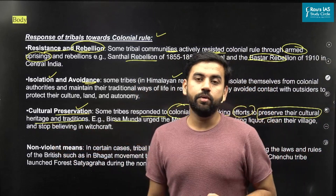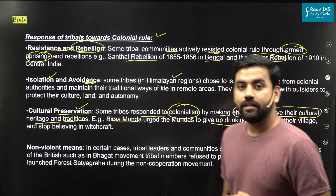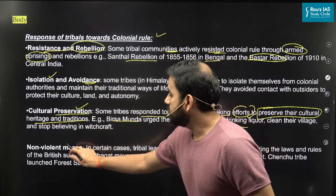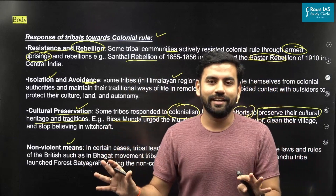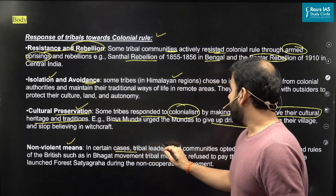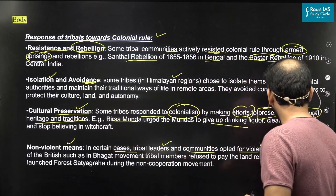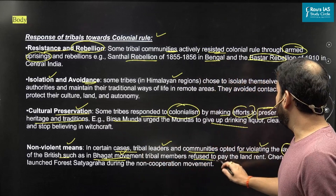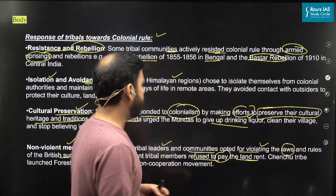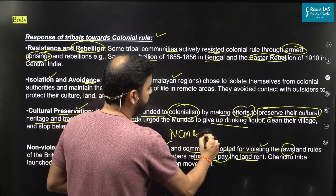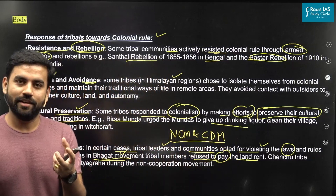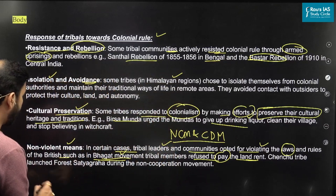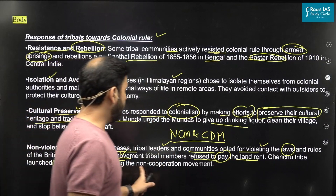Birsa Munda, for example, called for giving up drinking liquor — which meant protecting tribal culture from the invaders. The last response involved non-violent means. Not all means were violent. In certain cases, tribal leaders and communities opted for violating British laws and rules, such as the Bhagat movement, and refused to pay land rent — a kind of non-cooperation and civil disobedience at a smaller scale. The Kho tribe, for example, called for the Forest Satyagraha, which is a non-violent means of protest.